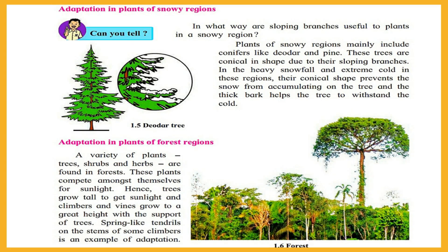Adaptation in plants of snowy regions: can you tell in what way are the sloping branches useful to plants in snowy regions? Plants of snowy regions mainly include conifers like deodar and pine. These trees are conical in shape due to their sloping branches. In the heavy snowfall and extreme cold, their conical shape prevents snow from accumulating on the trees, and the thick bark helps the trees to withstand the cold.